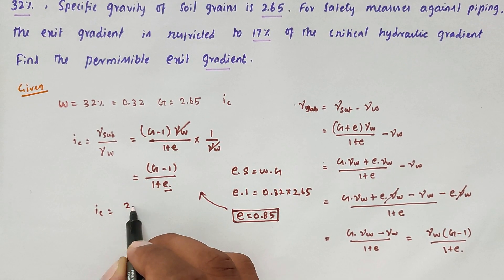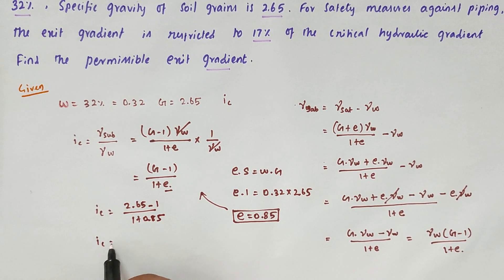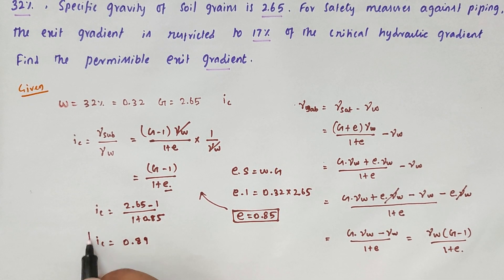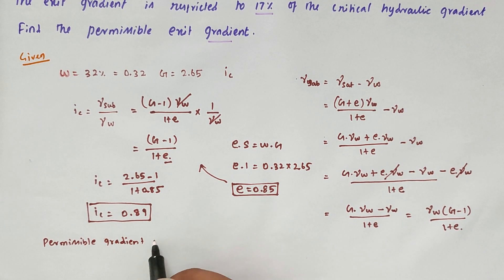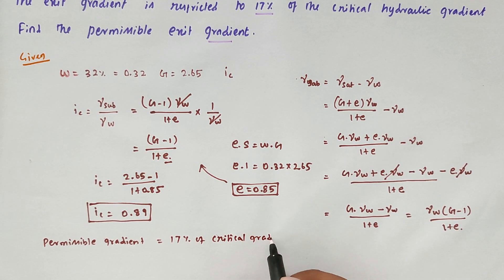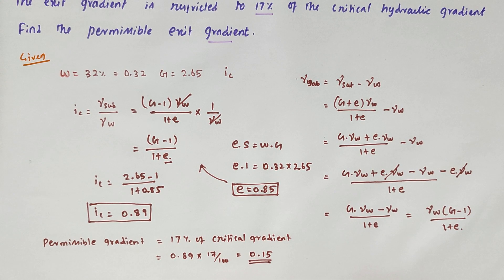Substituting into the critical gradient formula: IC equals (2.65 − 1) divided by (1 + 0.85), giving IC equals 0.89. The permissible gradient equals 70% of the critical gradient, so 0.89 × 17 divided by 100 equals approximately 0.15. So 0.15 is the answer. We will see the next problem in the next video. Thank you.